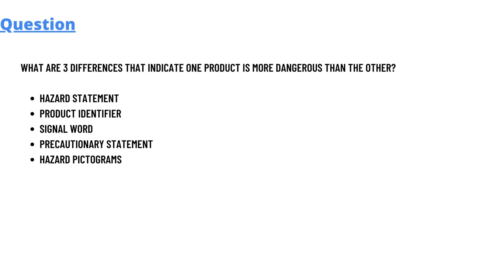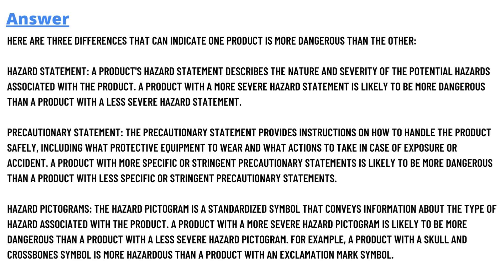The correct answer is there are three differences that can indicate one product is more dangerous than others. Firstly, the hazard statement of the product — a hazard statement describes the nature and severity of the potential hazards associated with the product. A product with a more severe hazard statement is likely to be more dangerous than a product with a less severe hazard statement.